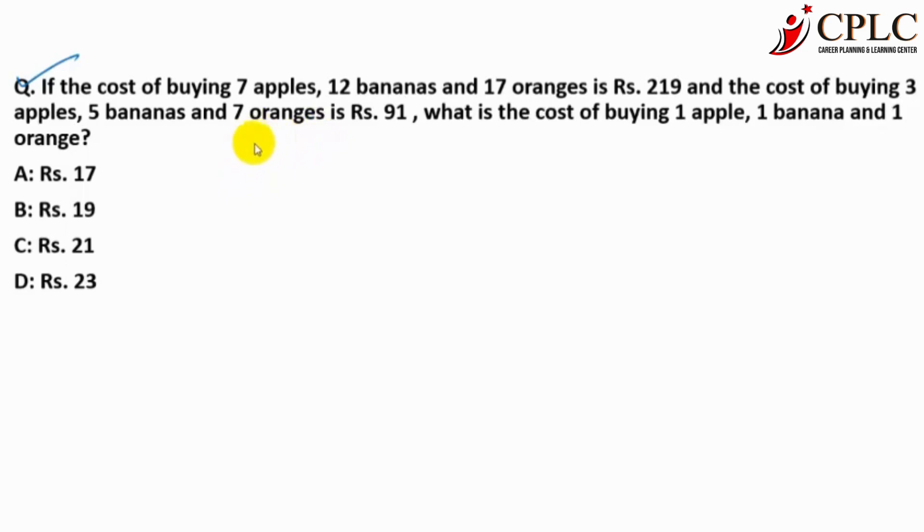So assume cost of 1 apple is A rupees. What is the cost of 7 apples? This is 7A. Similarly, cost of 1 banana is B. 12 bananas, 12B. Cost of 1 orange is C, or you can assume whatever you want. This is 17C, and this is equal to 219. Similarly, cost of 3 apples, 5 bananas, and 7 oranges, that is C, is 91.